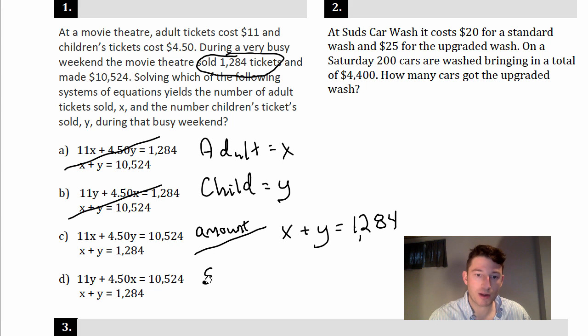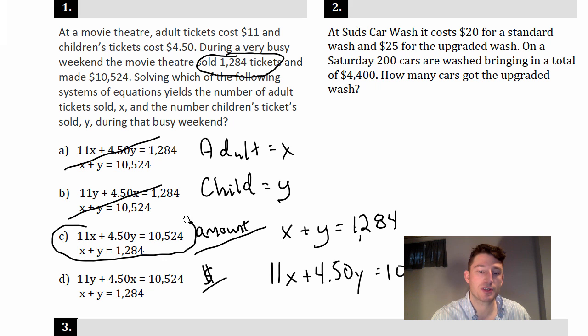Now let's do our price equation. So our price equation, we've got adult tickets, they cost $11 each. We've got kids tickets Y, they cost $4.50 each, for a grand total of $10,524. That's your second equation. Let's find that one and there it is: 11X plus 4.50Y equals 10,524. Choice C, you are done.